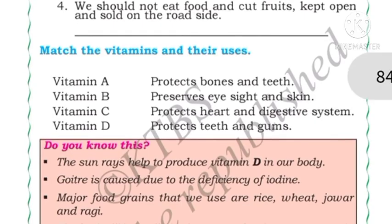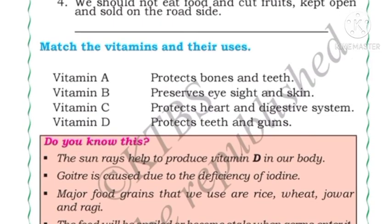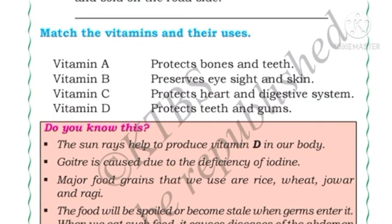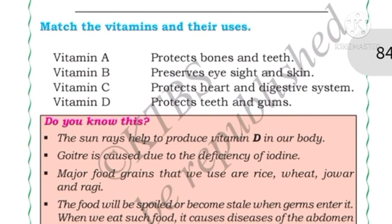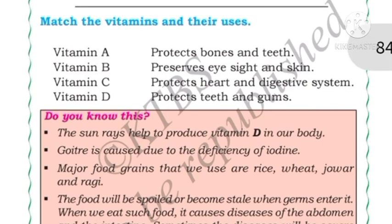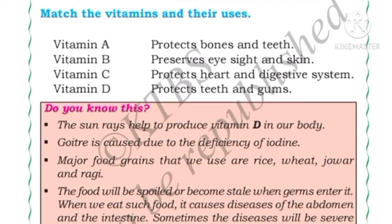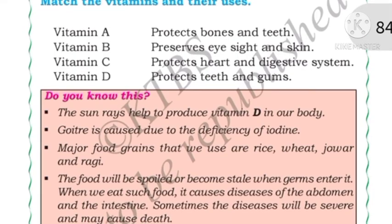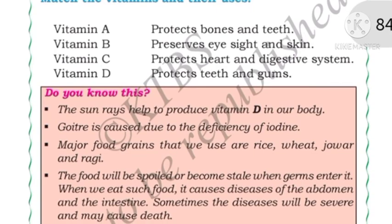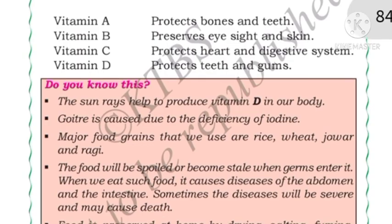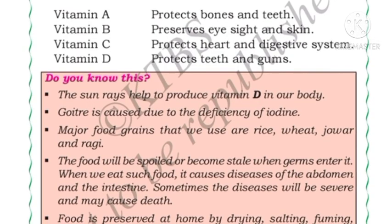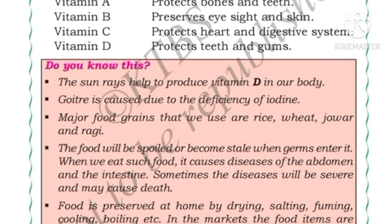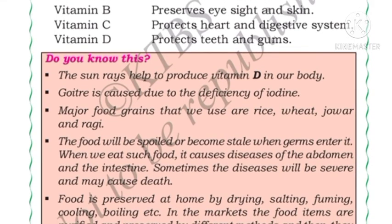Do you know? Sun rays help produce Vitamin D in our body. Goiter is caused due to the deficiency of iodine — salt is full of iodine, and if sufficient iodine is not provided, it can cause goiter. Major food grains we use are rice, wheat, jowar, and ragi. Food becomes stale when germs enter it; eating such food causes diseases in the abdomen and intestine, and sometimes can even cause death. So we should not eat spoiled food.